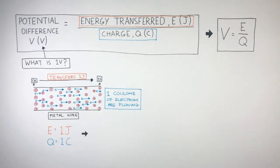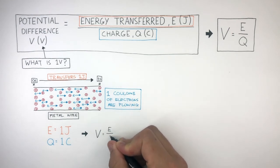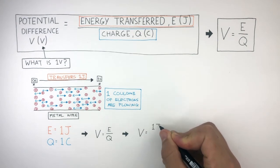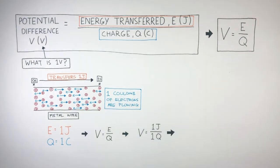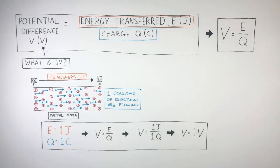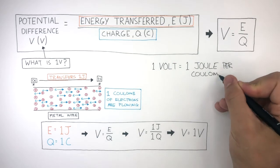So we write this down: V equals E over Q. Now we input the data, where V equals 1 joule divided by 1 coulomb, which equals a potential difference of 1 volt. So this calculation answers our question of what is 1 volt? 1 volt equals 1 joule per coulomb.